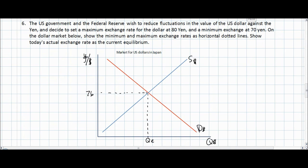Let's say that the U.S. government and the U.S. central bank, the Fed, are unhappy about the fluctuations in the value of the U.S. dollar. 100 yen per dollar is simply too harmful for the U.S. economy. Instead, the U.S. government wishes to maintain a stable exchange rate in a range between 80 yen and 70 yen — placing a price ceiling on the value of the dollar at 80 yen and a price floor at 70 yen. This is called a managed exchange rate system.